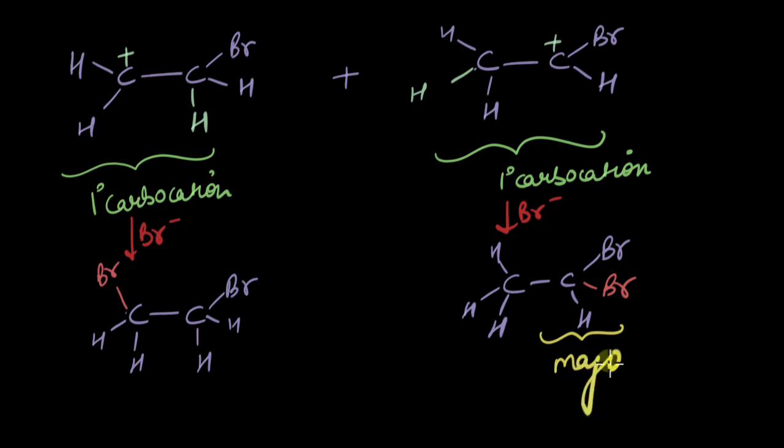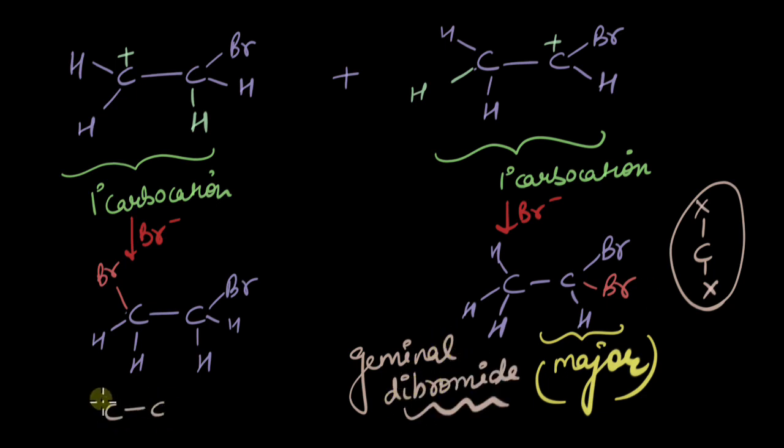What is it called? Whenever there are two halides on a single carbon we call it geminal dihalide. So it is a geminal dibromide. And whenever the halides are present on adjacent carbons we call them vicinal dihalides. So this one is a vicinal dibromide which is the minor product in this case.